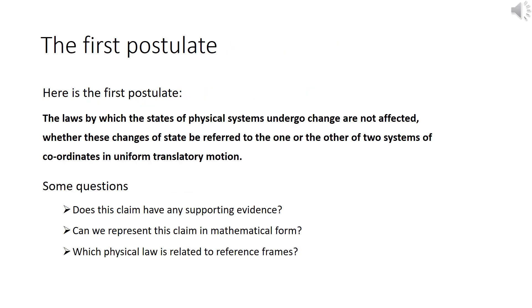Here would be the first postulate. The laws by which the states of physical systems undergo change are not affected, whether these changes of state be referred to the one or the other of two systems of coordinates in uniform translatory motion. Some questions that we may come up with are: does this claim have any supporting evidence? Can we represent this claim in mathematical form, and which physical law is related to reference frames?